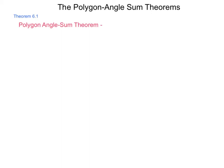First is our theorem 6.1, which we're going to call the polygon angle sum theorem itself, and this one reads, the sum of the measures of the interior angles of an n-gon is (n-2) times 180.